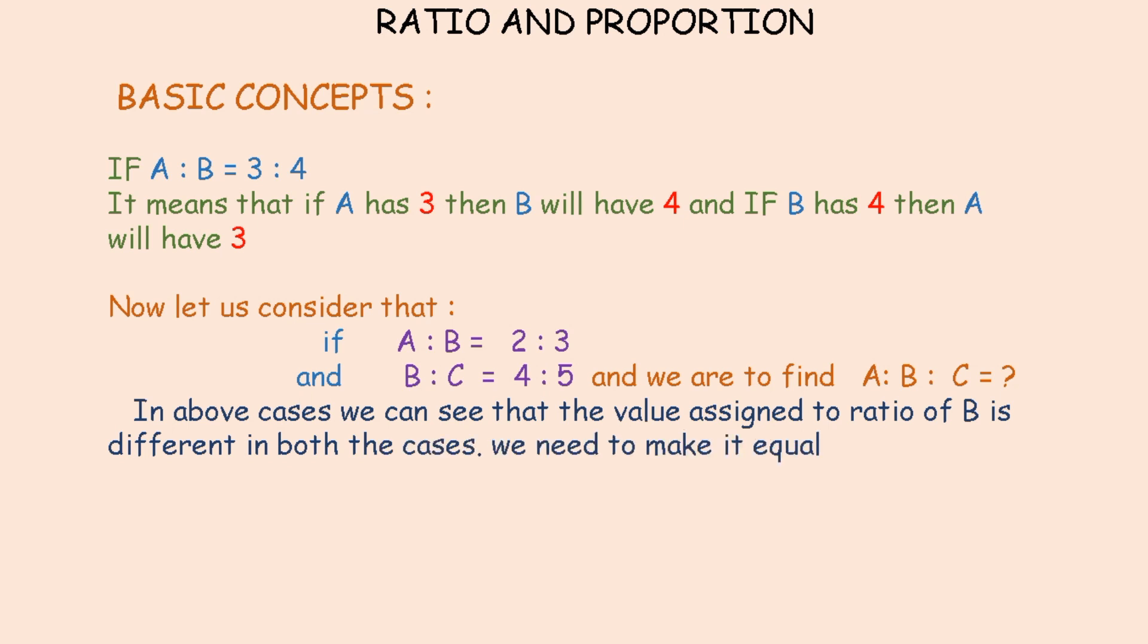We need to make it equal. How to make it equal? A ratio B is 2 ratio 3 multiplied by 4, and B ratio C is 4 ratio 5 multiplied by 3.